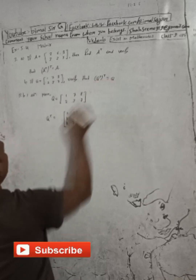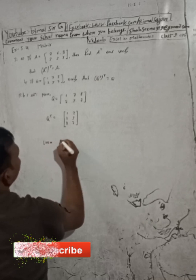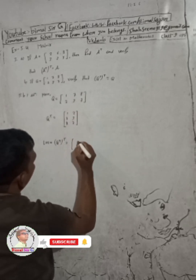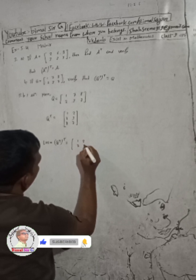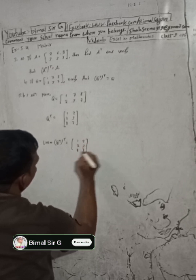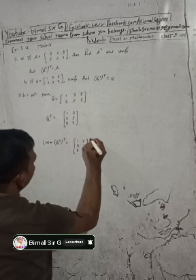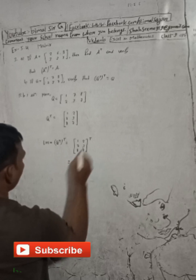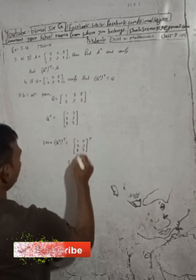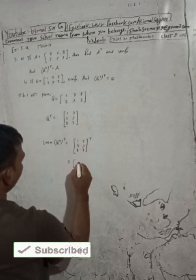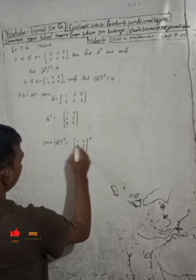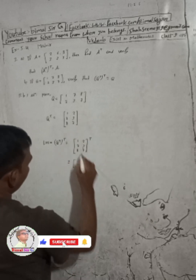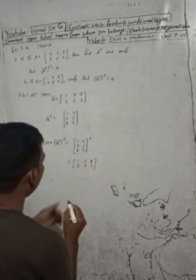Now take LHS equal to Q transpose and then its transpose. Q transpose is: one two, seven three, eight seven. Now its transpose — again interchange the rows and columns. The first row becomes the first column: one two. The second row becomes the second column: seven three. The third row becomes the third column: eight seven.